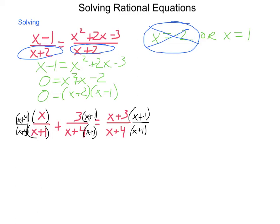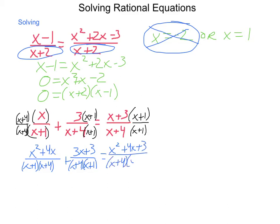So once we expand this out, we will come up with (x²+4x)/[(x+1)(x+4)], plus (3x+3)/[(x+4)(x+1)].